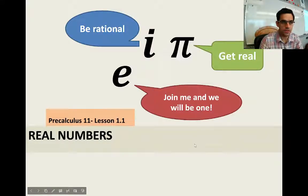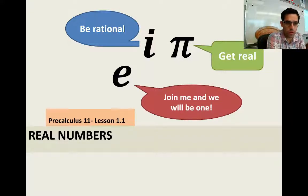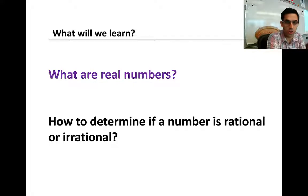All right, this is Precalculus 11, Lesson 1.1, Real Numbers. Unit 1 is called Radicals and Rational Exponents. In this lesson, we're going to talk about what are real numbers and how to determine if a number is rational or irrational.